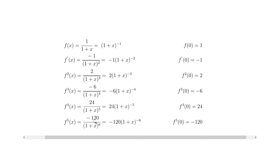Note that 1 to the 4, 1 to the 5, 1 to the 6 are all 1, making these calculations easy. Taking the derivative again for the second derivative: minus 2 times minus 1 is plus 2, giving us 2 times 1 plus x to the power of minus 3, so the second derivative at 0 is 2. For the third derivative: minus 3 times 2 is minus 6, giving minus 6 over 1 plus x to the minus 4, so the value is minus 6. Then minus 4 times minus 6 is 24, giving the fourth derivative as 24 times 1 plus x to the minus 5, valued at 24. Finally, minus 5 times 24 is minus 120, giving the fifth derivative as minus 120 over 1 plus x to the power of 6, valued at minus 120. That's all our derivatives done.